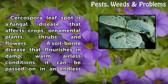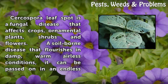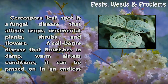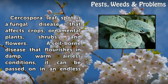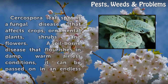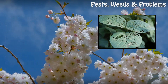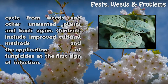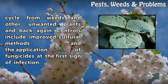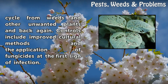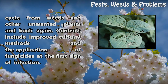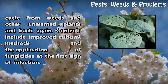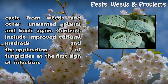Cercospora leaf spot is a fungal disease that affects crops, ornamental plants, shrubs and flowers. A soil-borne disease that flourishes in damp, warm, airless conditions, it can be passed on in an endless cycle from weeds and other unwanted plants and back again. Controls include improved cultural methods and the application of fungicides at the first sign of infection.